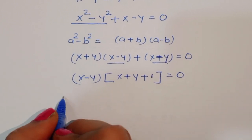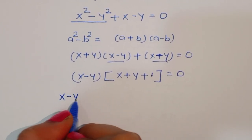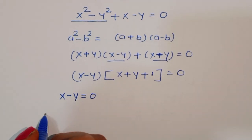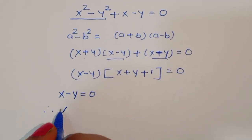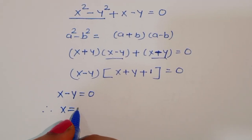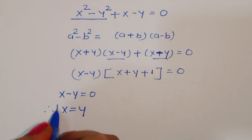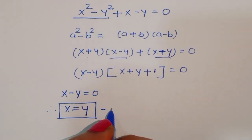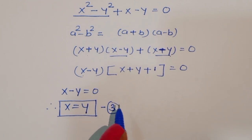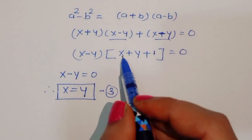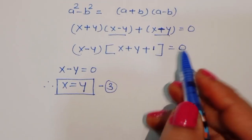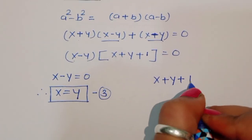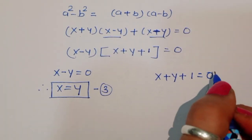We now have two equations. The first is x - y = 0, therefore x = y. This is equation 3. The second is x + y + 1 = 0.